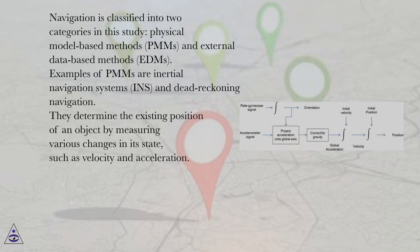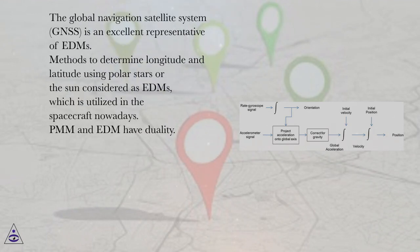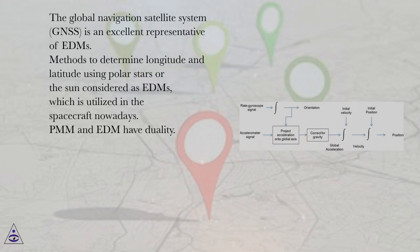Navigation is classified into two categories in this study: physical model-based methods (PMMs) and external data-based methods (EDMs). Examples of PMMs are inertial navigation systems (INS) and dead-reckoning navigation. They determine the existing position of an object by measuring various changes in its state, such as velocity and acceleration. The Global Navigation Satellite System (GNSS) is an excellent representative of EDMs. Methods to determine longitude and latitude using polar stars or the sun are also considered as EDMs, which are utilized in spacecraft nowadays.